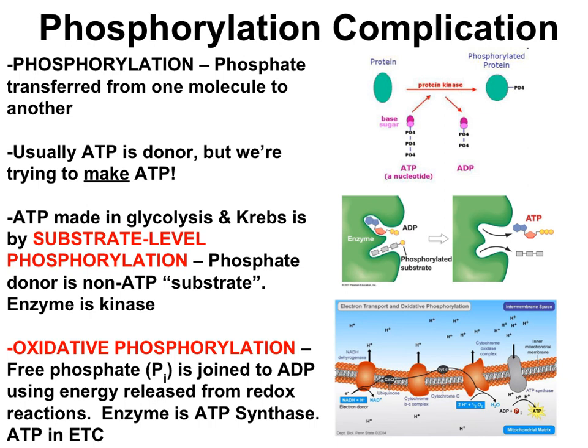During cell respiration, ATP is generated in two different ways. Substrate level phosphorylation is one way, and oxidative phosphorylation is the other. What these both have in common is phosphorylation, which we defined as the transfer of phosphates from one molecule to another. Usually ATP is the phosphate donor, but in cell respiration, ADP is the phosphate acceptor to make ATP.